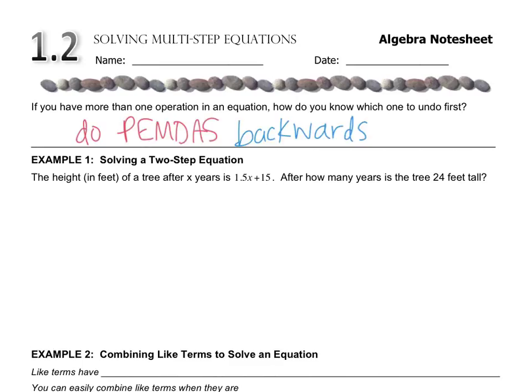So we're going to do PEMDAS backwards. So if we have addition or subtraction, we're actually going to remove that first, rather than last. If we have multiplication and division, we'll remove that after we've removed any addition and subtraction. So we're going backwards through PEMDAS.